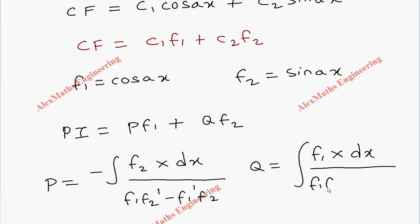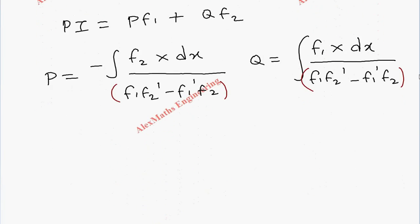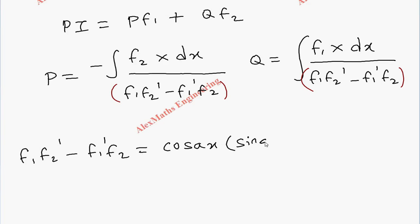And Q is the integral of f1 into X dx, whole divided by f1·f2' minus f1'·f2. Since both P and Q share the same denominator, let's first find the value of f1·f2' minus f1'·f2. This equals cos(ax) times the derivative of sin(ax), minus the derivative of cos(ax) times sin(ax).